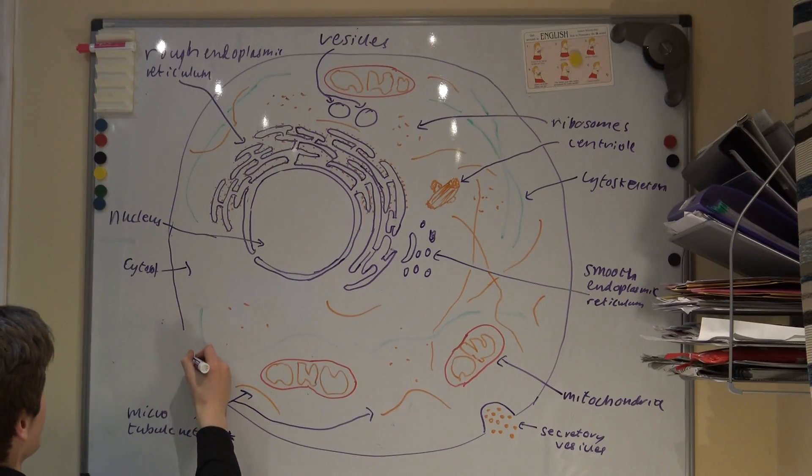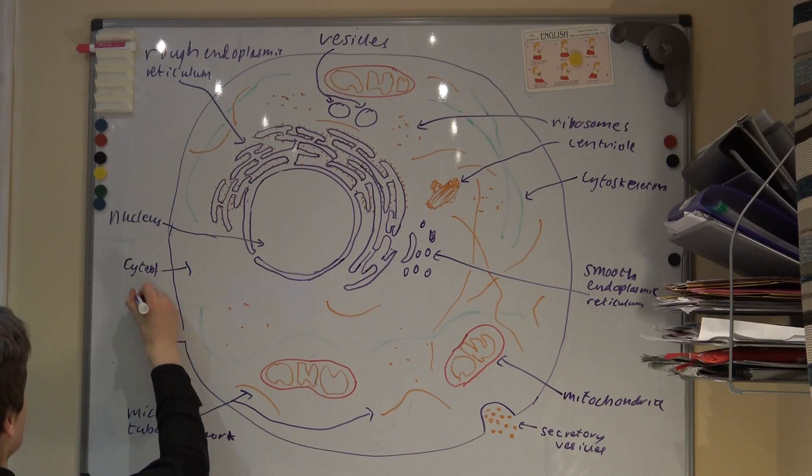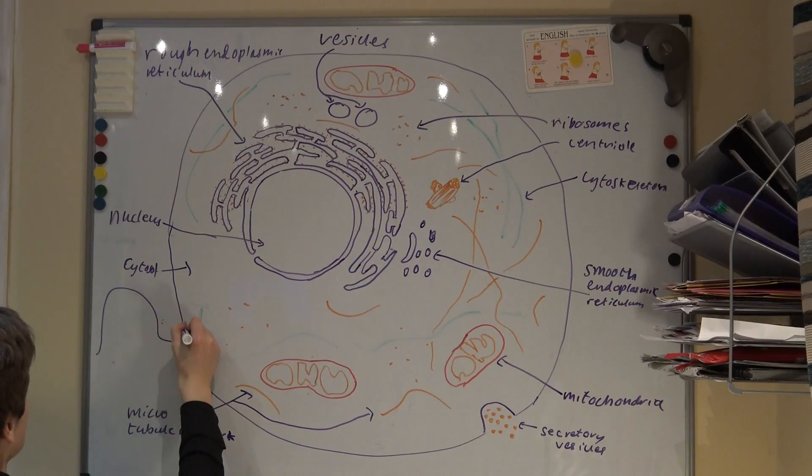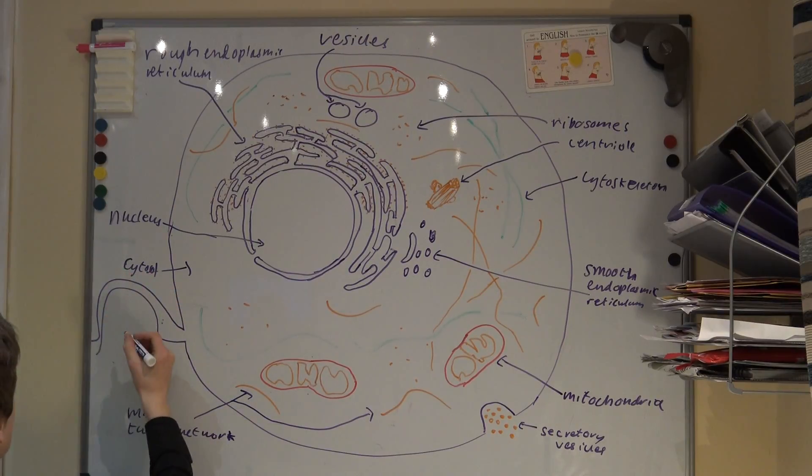Well, it seems only logical that I now tell you about flagella and cilia. They are both extensions that protrude from cells. Flagella are longer than cilia, but cilia are usually present in greater numbers. Flagella are used primarily to enable the cell to move.